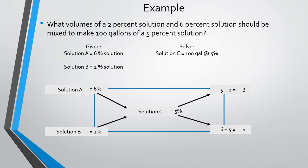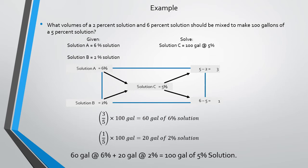Let's make our solution rectangle. Starting from the top left-hand corner, we have solution A, which is equal to 6%. Working diagonally with solution C, which is 5%, we know that 6 minus 5 is equal to 1%. Looking at solution B, which is equal to 2%, and subtracting it from solution C at 5%, we get 5 minus 2 equals 3%. So you divide the 3% over the 5% times 100 gallons, which equals 60 gallons of the 6% solution.